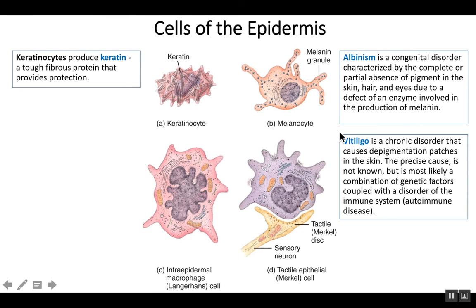Vitiligo is a little bit different — it's the loss of melanocytes, and it occurs in patches, not everywhere. We're not quite sure what causes it, but it's believed to be an autoimmune disorder with some genetic factors at play. The melanocytes are actually destroyed in these patches of the skin.